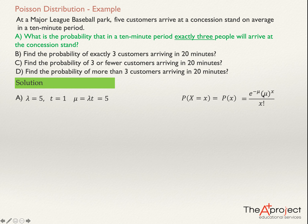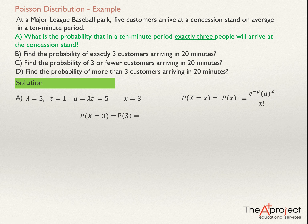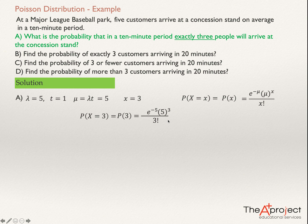So I can put five into the formula. The mean is five. The question asks for exactly three, so x equals three. The probability of x equals three will be e to the power of negative five, times five to the power of three, divided by three factorial. Using a calculator, the answer will be 0.1404.